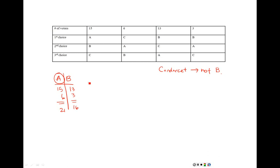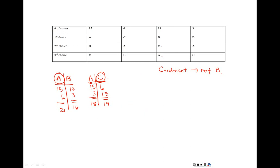A looks promising, so let's see how A matches up against C. In the first column, A gets those 15 votes. In the next column, C gets the 6 votes. In the third column, C is ranked above A, so C walks away with those 13 votes. In the last column, A is higher ranked and gets 3 votes. A had 18 votes and C had 19 votes — so A lost the A versus C matchup, meaning A is not the Condorcet candidate either.